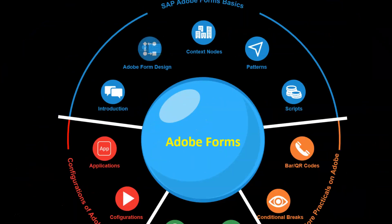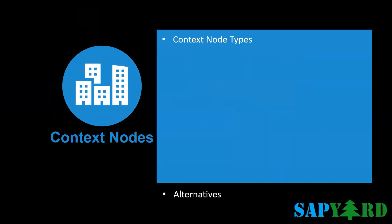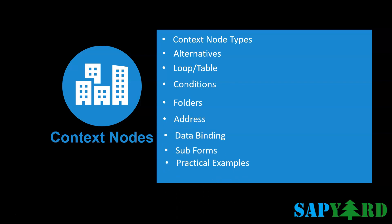Next in our agenda is context node types and data binding. We will look into practical usage of different context node types like alternative, loops, tables, conditions, folders and address. We will also learn about subforms and master one very important concept in Adobe — data binding. We will cover different real use case scenarios of data binding.